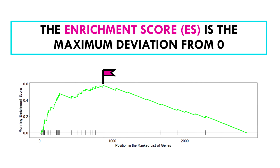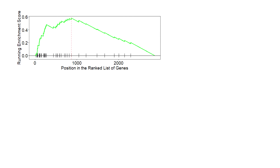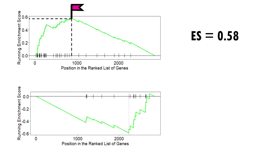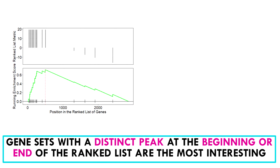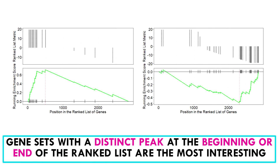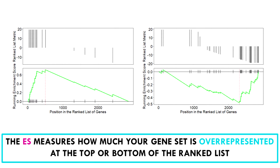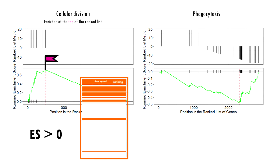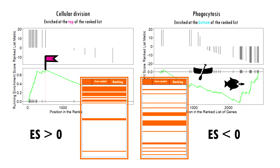Technically, the enrichment score for a gene set is the maximum deviation from zero — basically the score furthest from zero. So if zero is sea level, the enrichment score for a particular pathway can be the peak of the mountain or a very deep valley. Gene sets with a distinct peak at the beginning or the end of the ranked list are generally the most interesting. A positive enrichment score indicates gene set enrichment at the top of the ranked list; a negative enrichment score indicates gene set enrichment at the bottom.